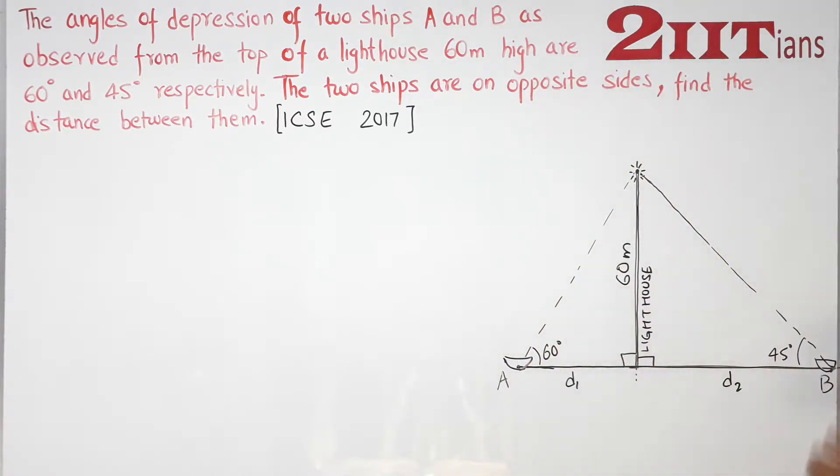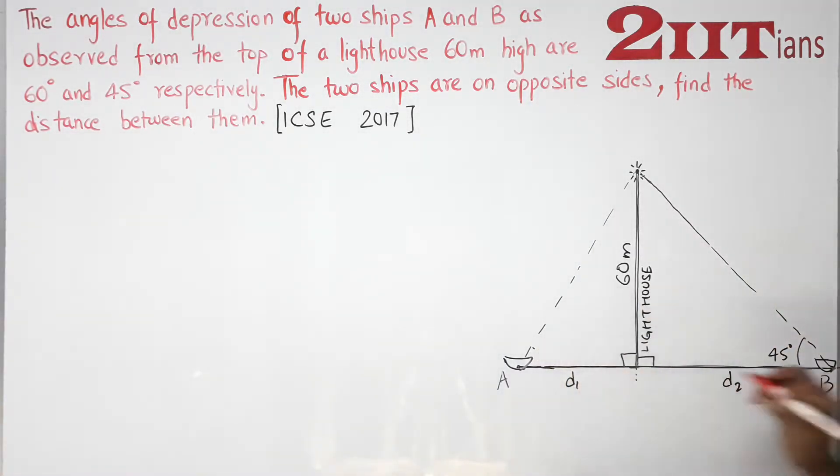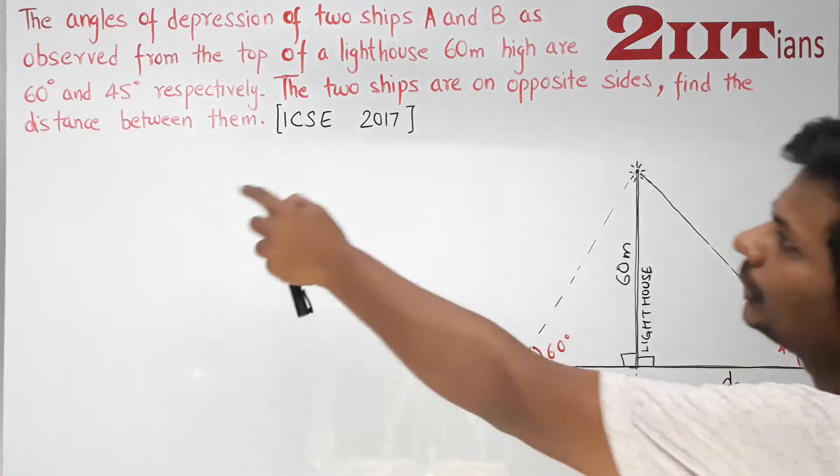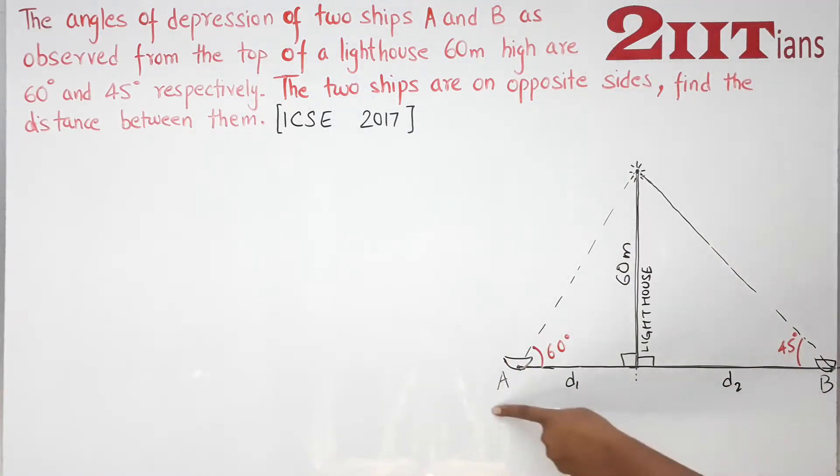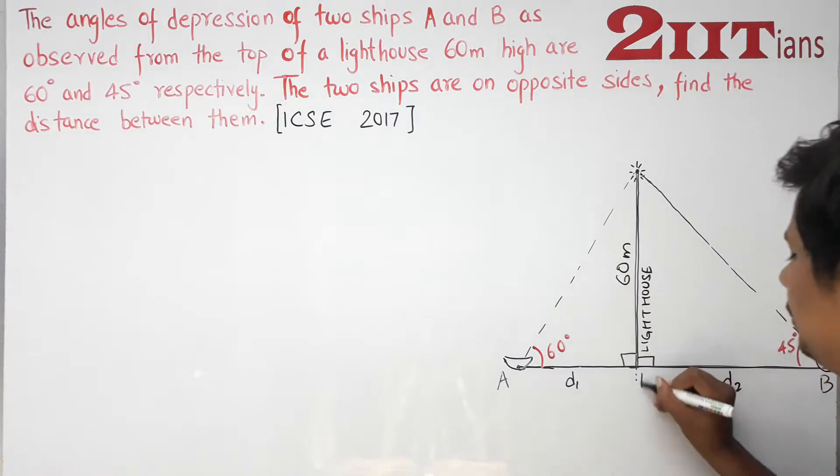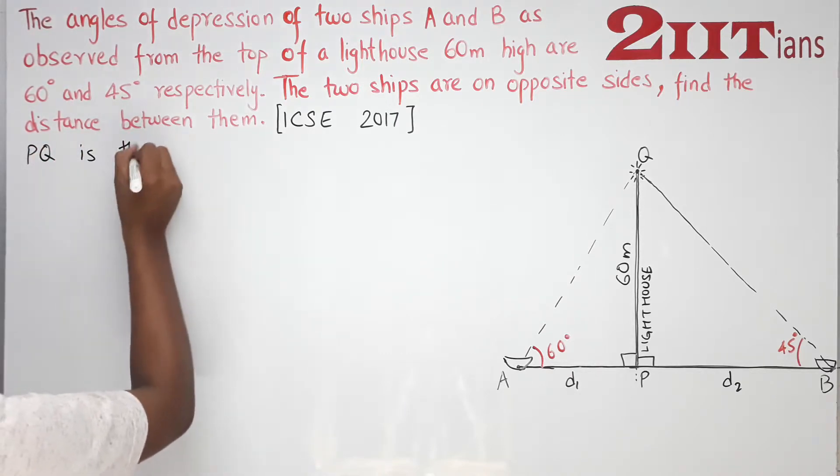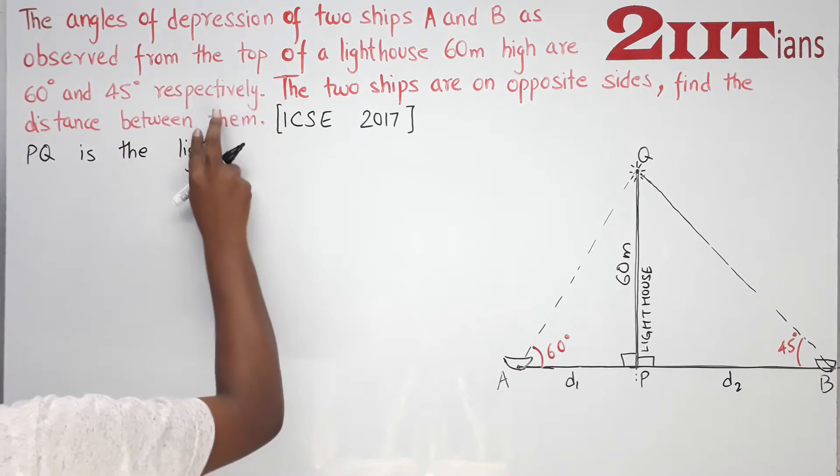The two ships are on opposite sides. These are ships. D1 plus D2 we need to find. Let's denote the lighthouse as PQ. PQ is the lighthouse.